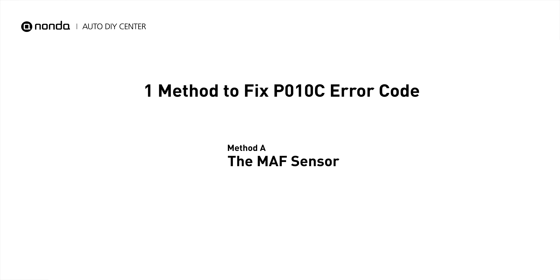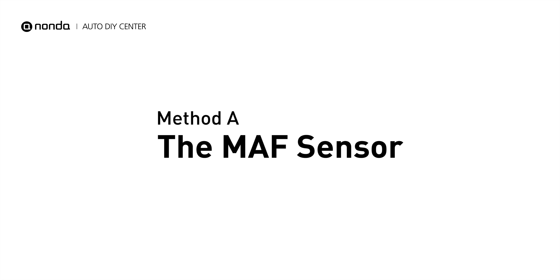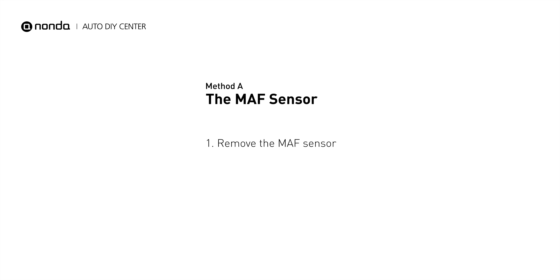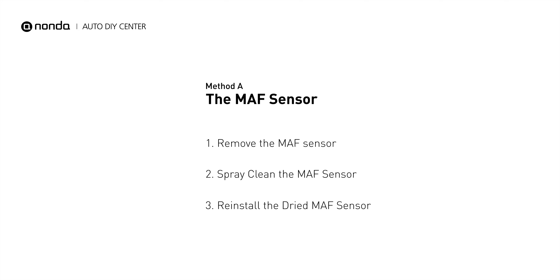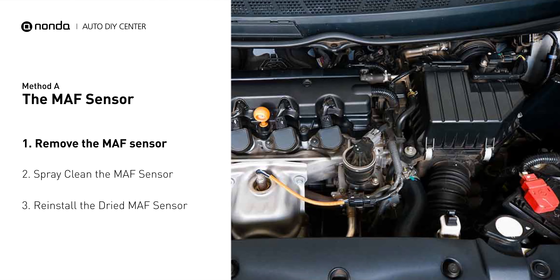Here is one simple DIY method you can try to solve this problem. Method A: MAF sensor. MAF sensors are located between the air filter and the throttle body.